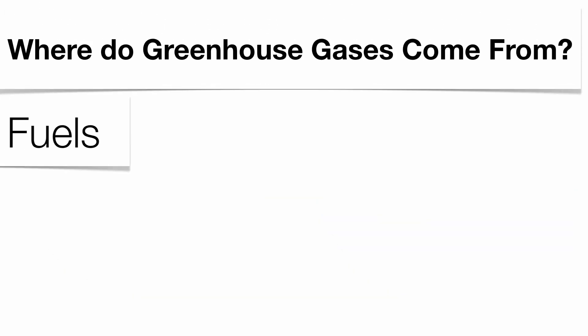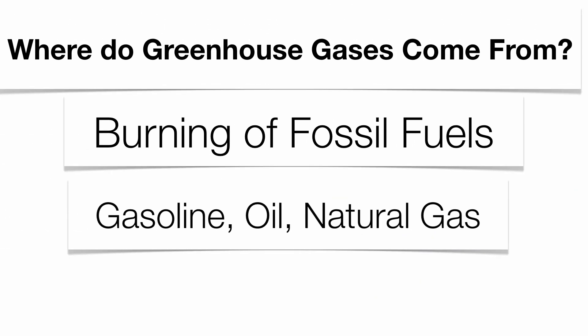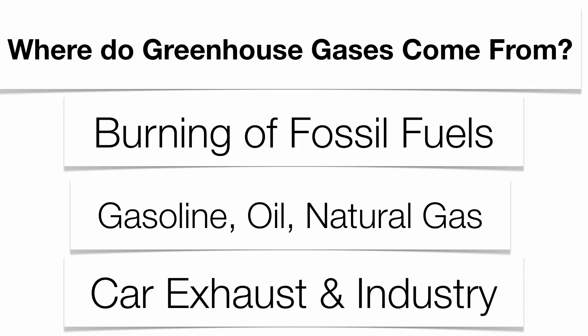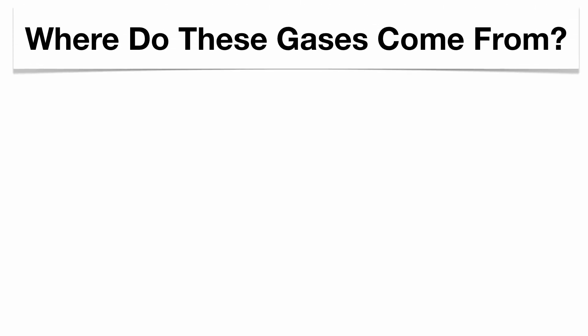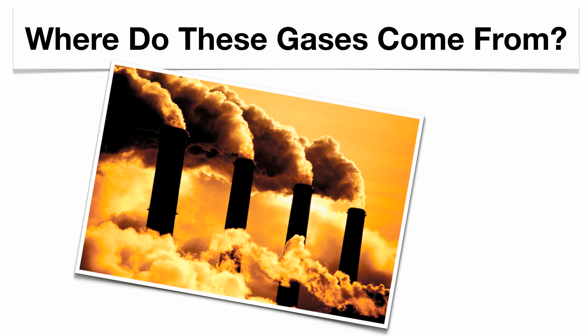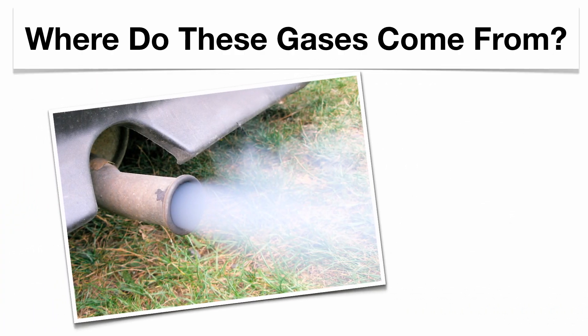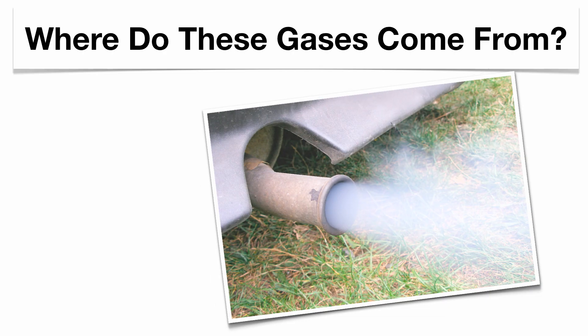Where do these gases come from? They come from the burning of fossil fuels — whether it's gasoline, oil, or natural gas. When those resources get burned, gases are released into the atmosphere in very large quantities. Car exhaust and industrial regions are the main reason why we have these greenhouse gases in the atmosphere. The burning of fossil fuels through industrial plants and car exhaust are the major contributors to greenhouse gas accumulation.